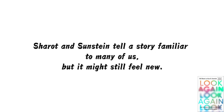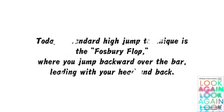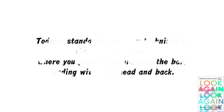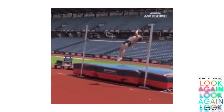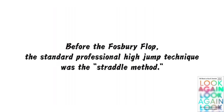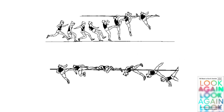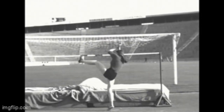Sharot and Sunstein tell a story familiar to many of us. In middle school, you probably practiced the scissors high jump — crossing the bar with your legs one after the other, barely using your body — a technique not competition worthy. Today's standard high jump technique is the Fosbury flop, where you jump backward over the bar, leading with your head and back. This is a scientifically optimized posture, but it's counterintuitive. Before the Fosbury flop, the standard professional technique was the straddle method, involving leading with one leg and crossing the bar horizontally. Almost every high jumper used this technique before 1968, except for one person.